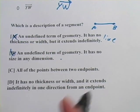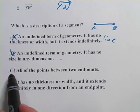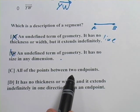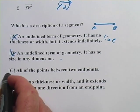So it's not A, it's not B. Let's look at C here. C says all of the points between two endpoints. And this is actually going to be the correct answer.